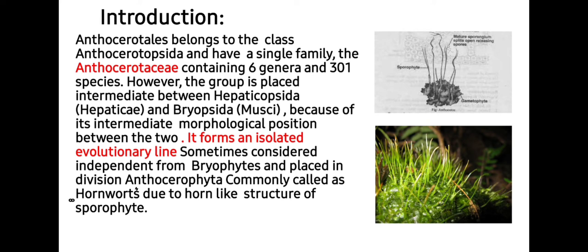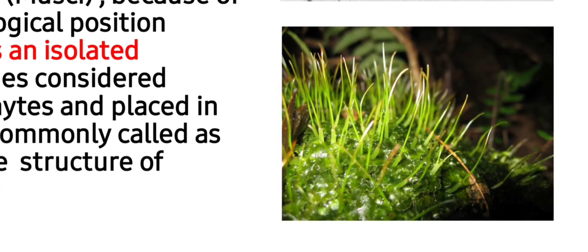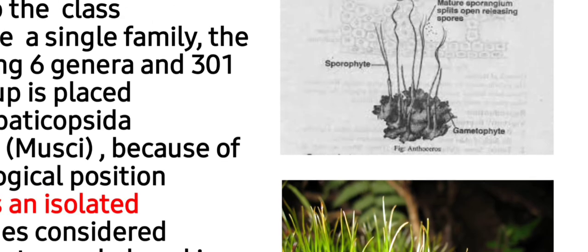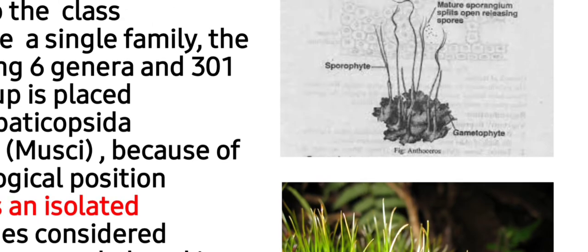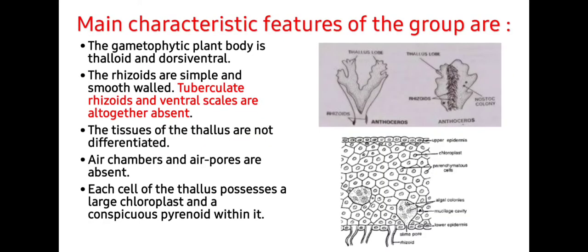This division is commonly called hornwort, and we call it hornwort due to the horn-like structure of its sporophyte. As you can see in these images, the sporophyte is much elongated and looks like a horn. That's why we call Anthocerotophyta as hornwort.